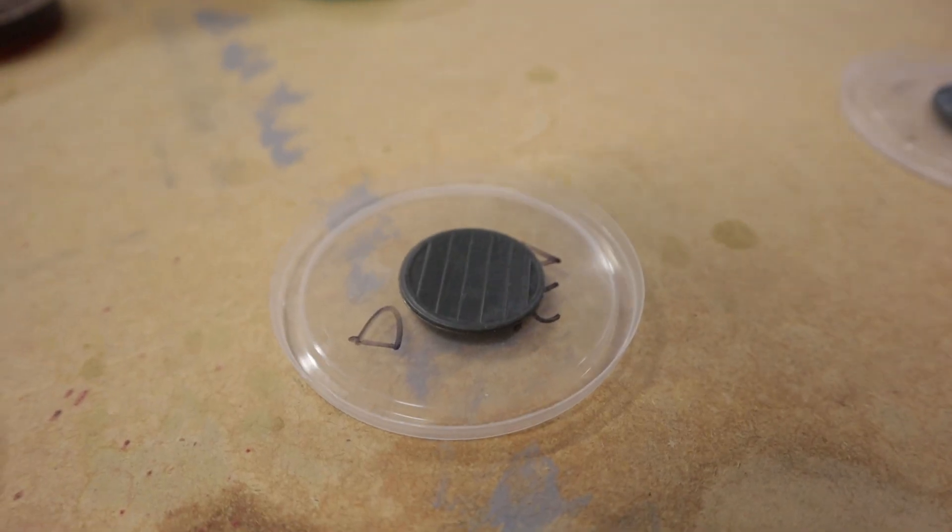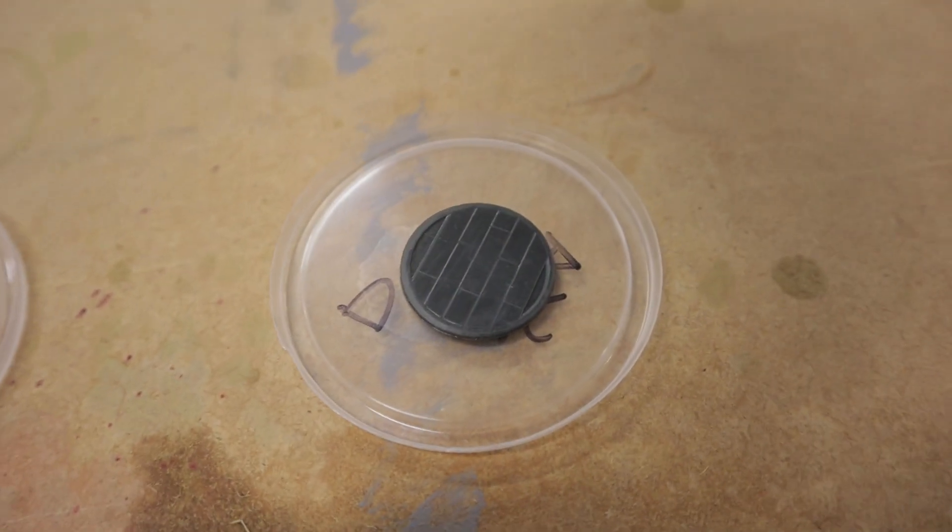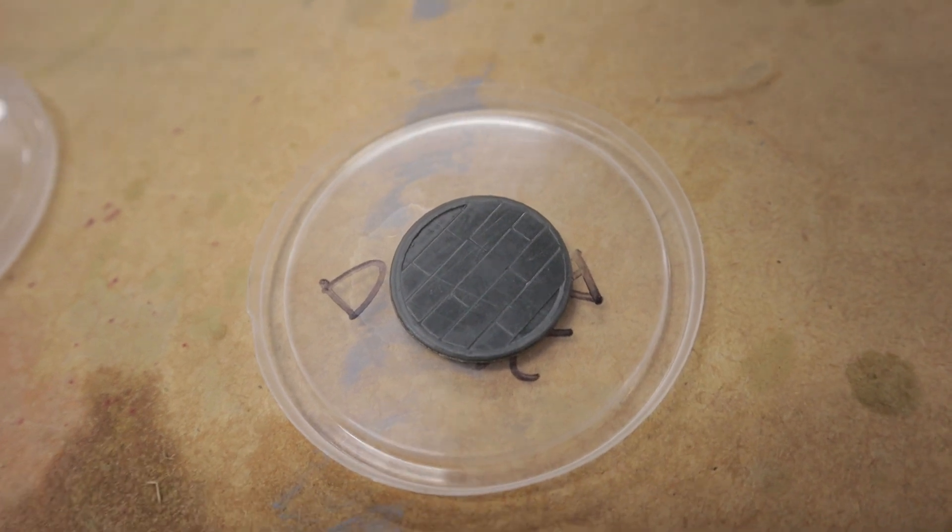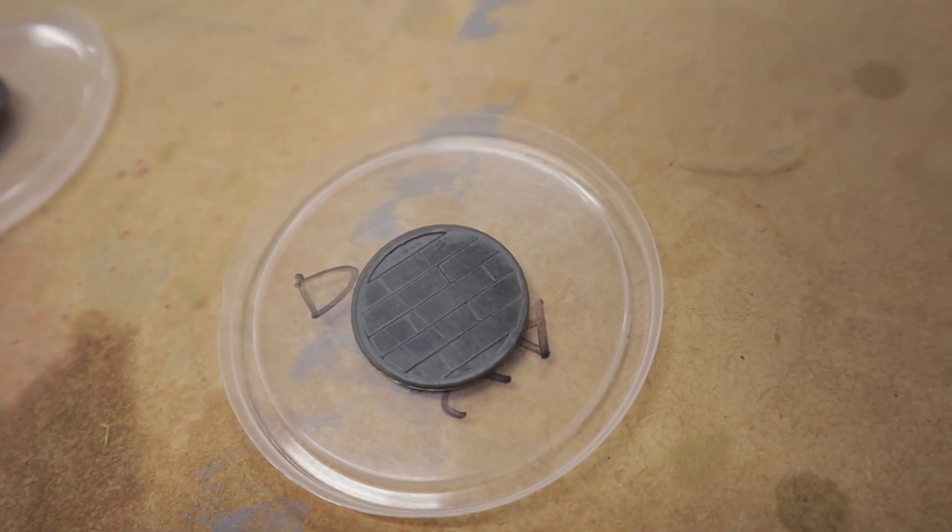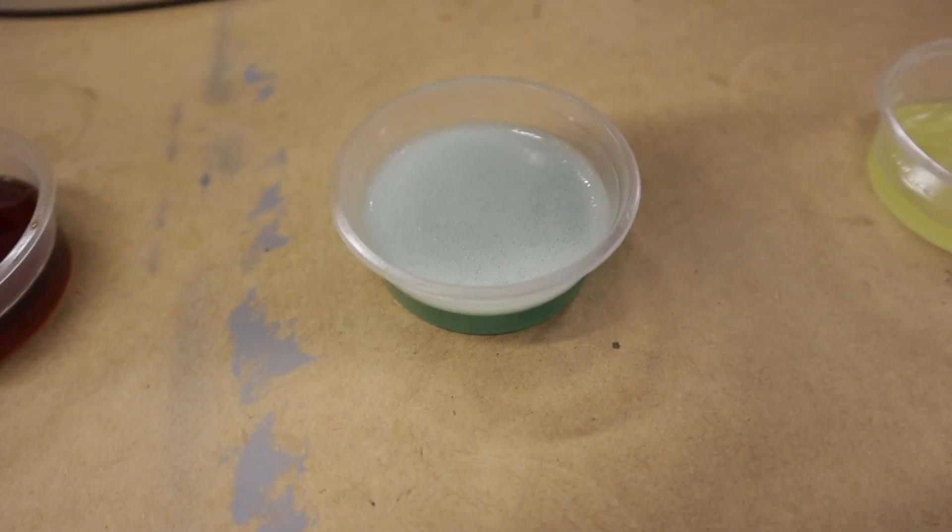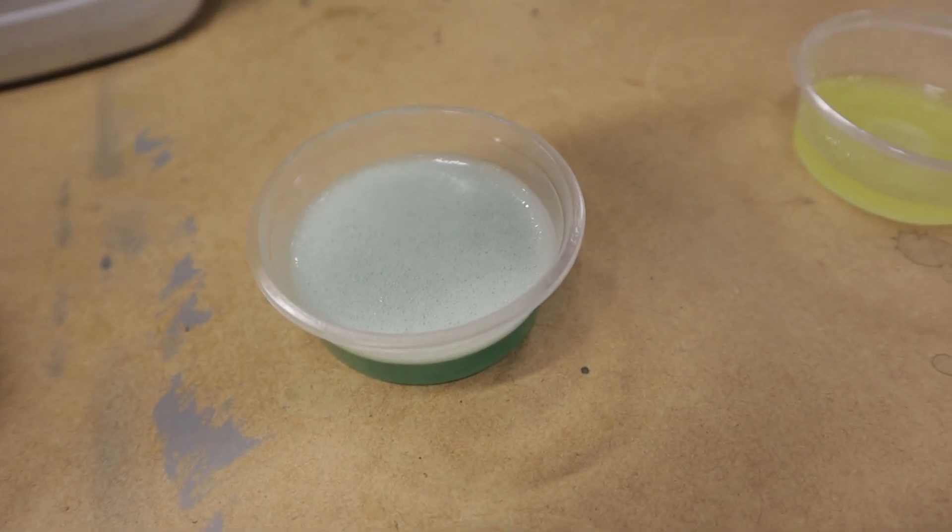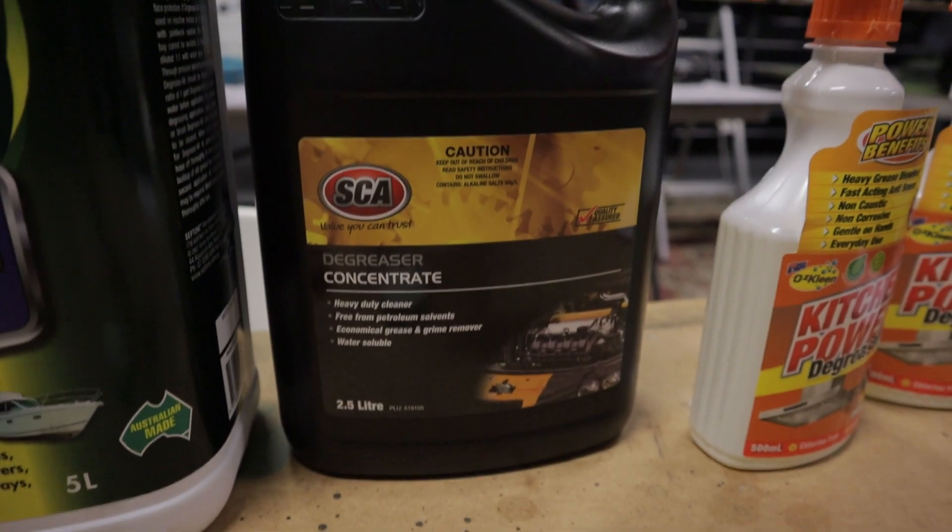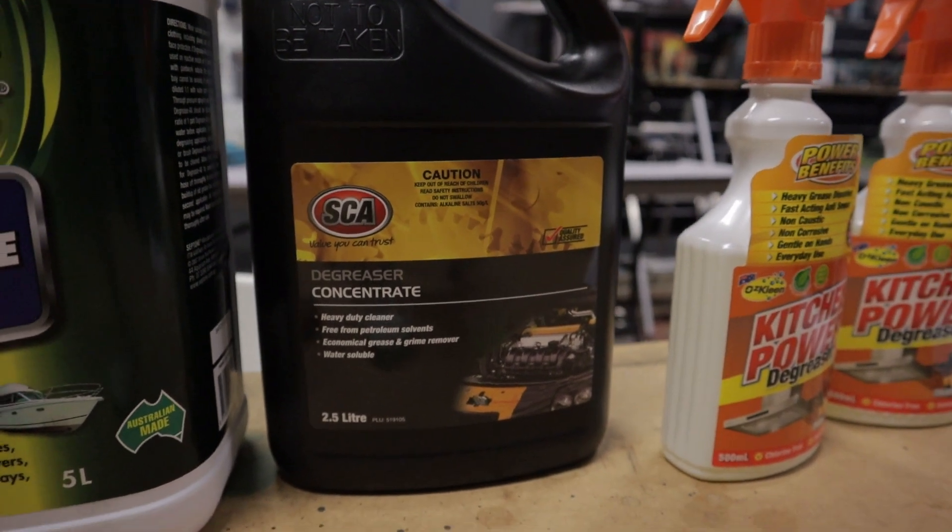Now let's look at the prints with degreaser concentrate. There is a little shiny spot on the print, but overall, I'm really impressed by this. And looking at the liquid, it's hard to tell since it's all bubbly, but from the print, you know it has removed a good amount of resin.